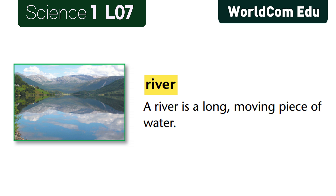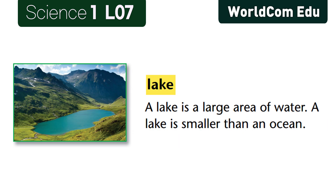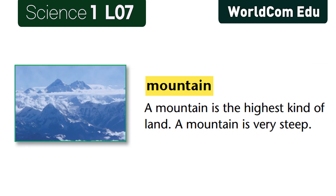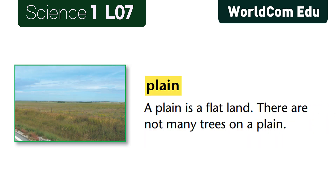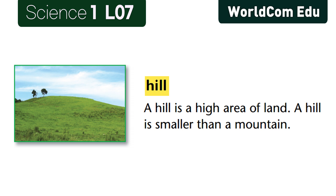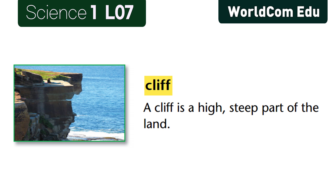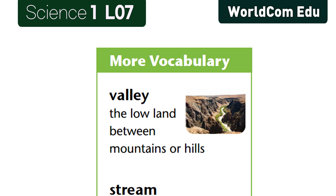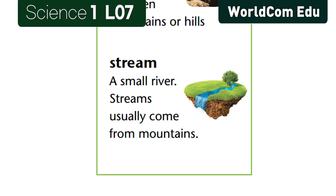To review: a river is a long moving piece of water. A lake is a large area of water, smaller than an ocean. A mountain is the highest kind of land and is very steep. A plain is flat land with not many trees. A hill is a high area of land, smaller than a mountain. A cliff is a high, steep part of the land. A valley is the low land between mountains or hills. A stream is a small river — streams usually come from mountains.